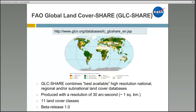The Food and Agriculture Organization has developed a global land cover map using the best available national, regional, and sub-national land cover databases. They used a specialized system and fusion techniques to harmonize the various databases and developed a procedure to update the database when new datasets become available. The database is comprised of 11 land cover layers and is currently in beta release but can be downloaded from the website listed here.